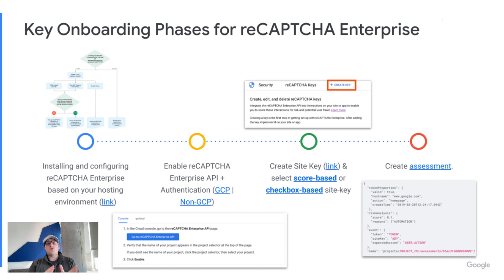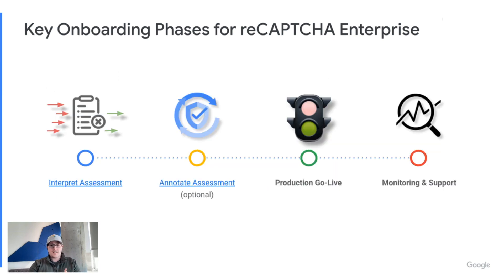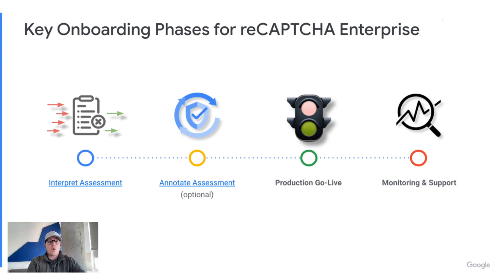From there you'll move into creating a site key — pretty straightforward, with a step-by-step link on how to do it. You'll choose whether it's a score-based or checkbox-based site key, and then you'll create an assessment. Once you've created an assessment, you're able to interpret it. You have the choice of whether or not to annotate that assessment once it's been interpreted. Then you push it into production, it goes live, and you can monitor it. If you need support, there are lots of different avenues for that.